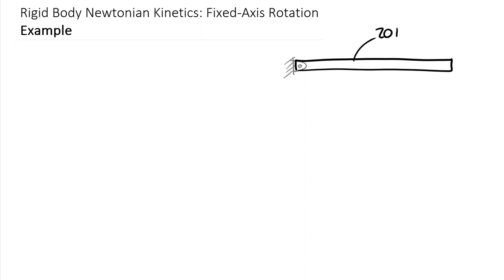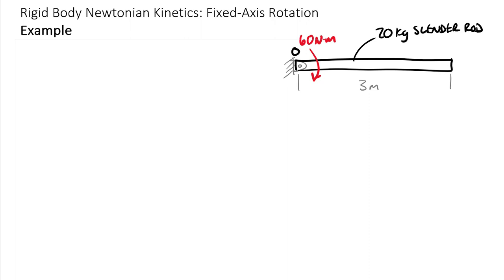This is a 20 kilogram slender rod that is 3 meters long — fairly lightweight and long. It is under the following forces or couples: we have a 60 Newton meter couple applied about the fixed axes pin, which we'll call point O. We're also given that there's an initial angular velocity, omega 1, equal to 5 radians per second.